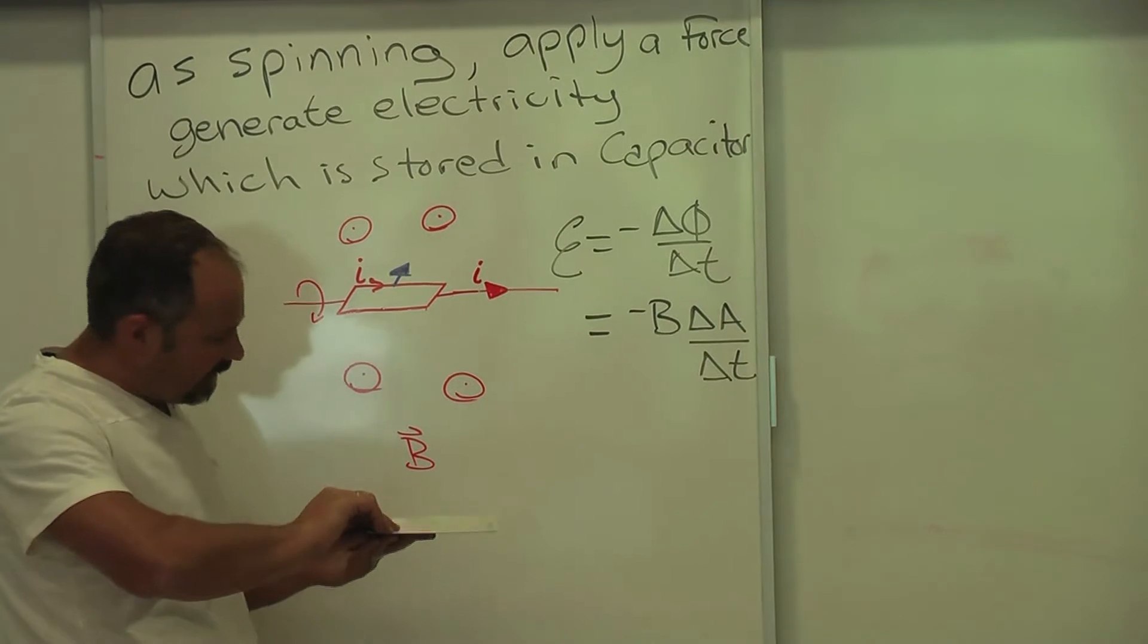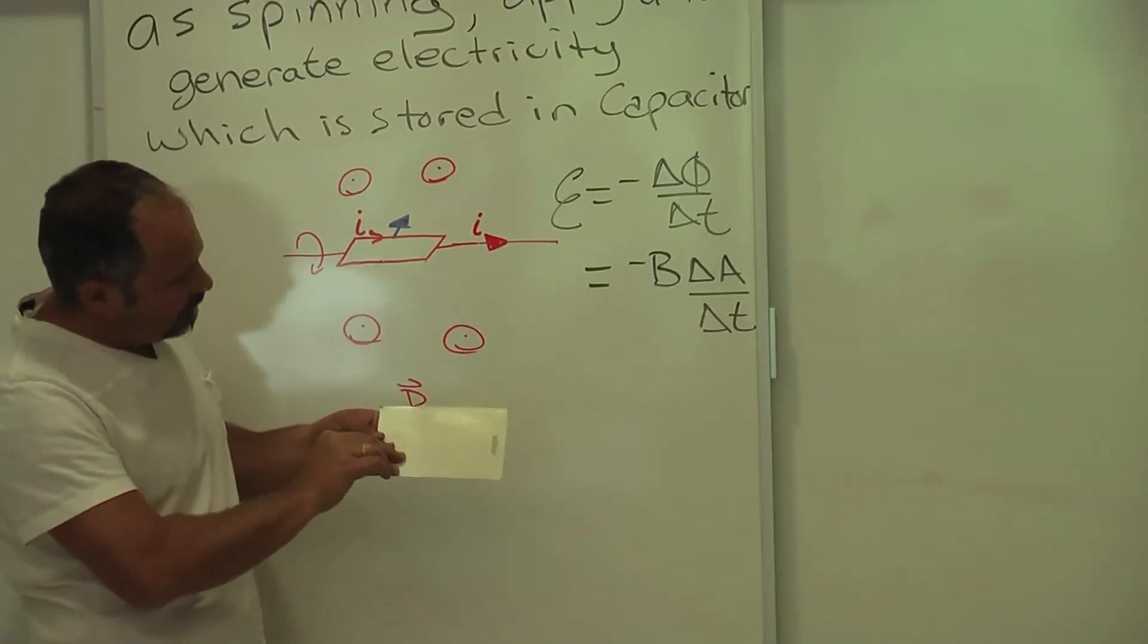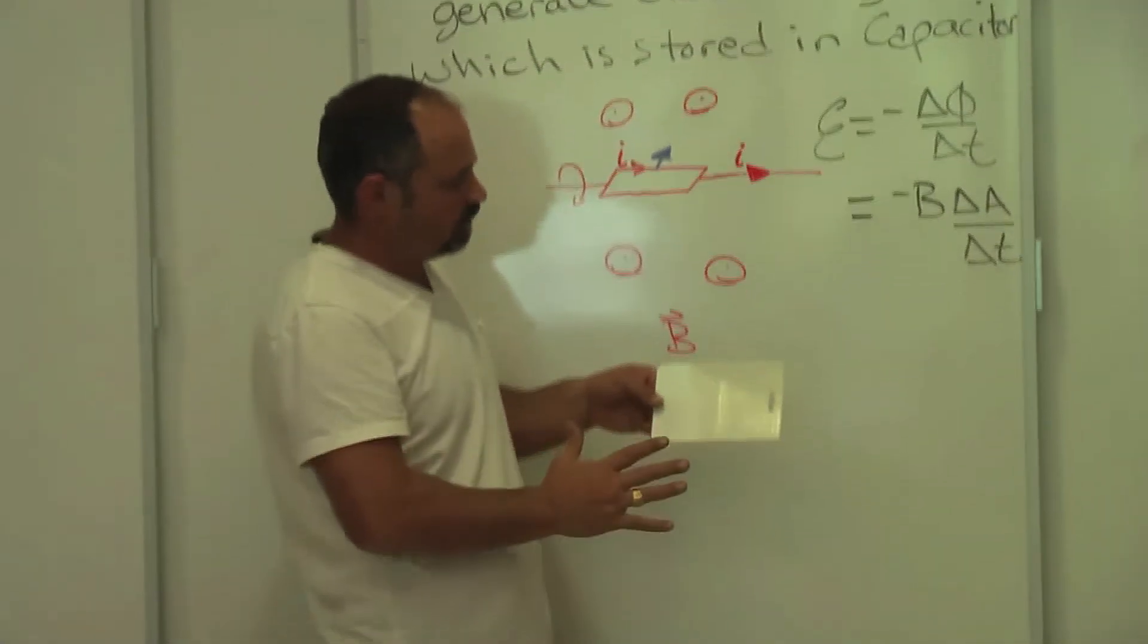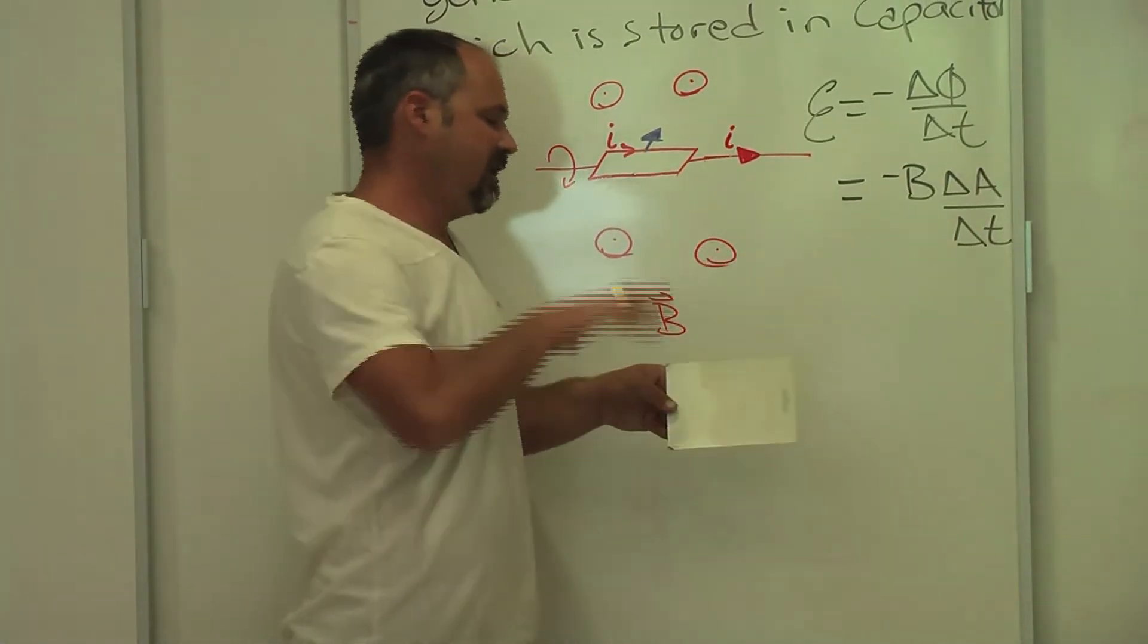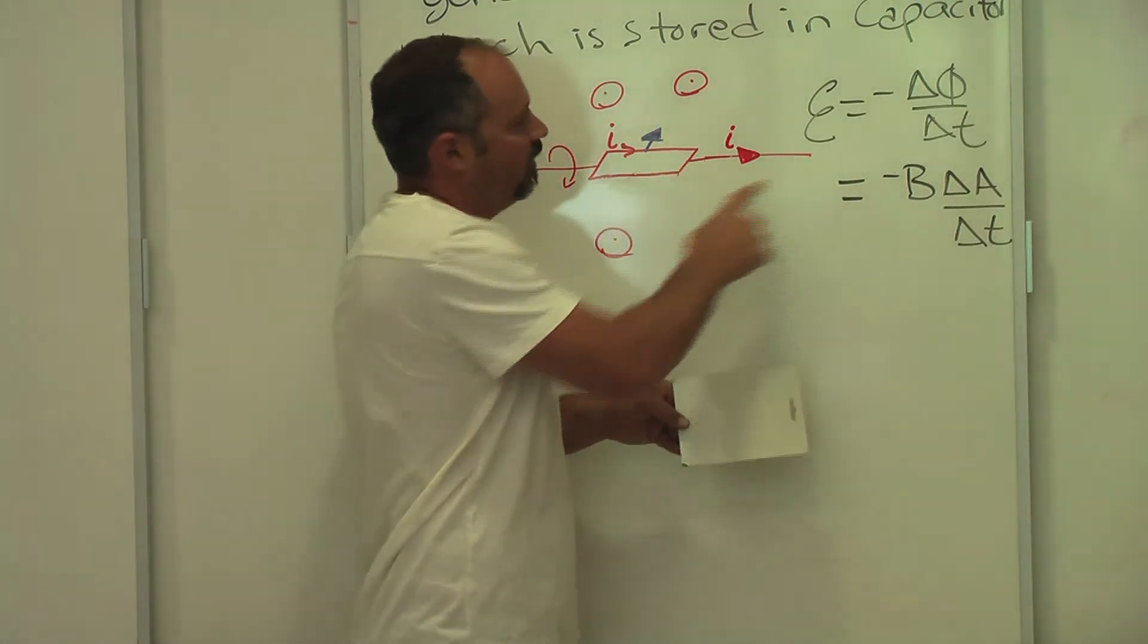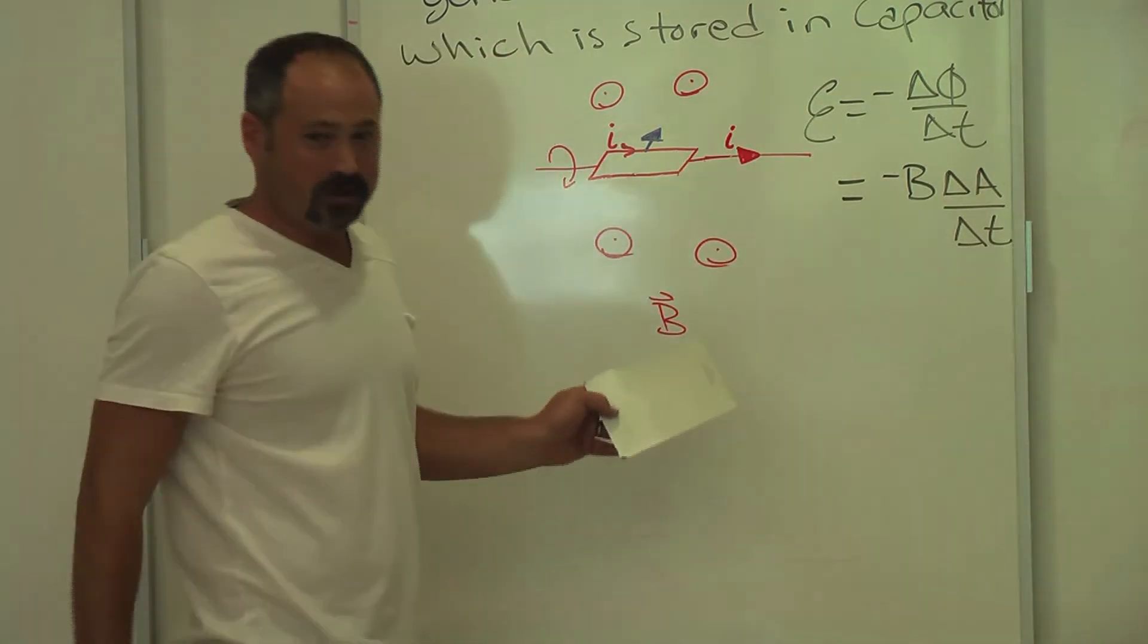So as I bring this up, you get more and more magnetic field in this area, and therefore electricity starts flowing like this to oppose that change. Well, that's how the electricity is generated and then stored in the capacitor.